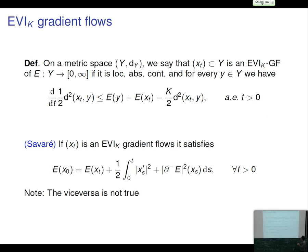The gradient flow notion from yesterday grants existence under convexity and lower semi-continuity assumptions, while the EVI_K notion grants uniqueness and contractivity. One can expect EVI_K gradient flows to exist if and only if the functional is K-convex and the metric space looks Riemannian rather than Finsler, since deriving the definition required differentiating d² which has good properties only when the distance comes from a scalar product. In the next lecture I will show that on RCD(K,∞) spaces — but not merely CD(K,∞) — the gradient flow of the entropy on the Wasserstein space is EVI_K.